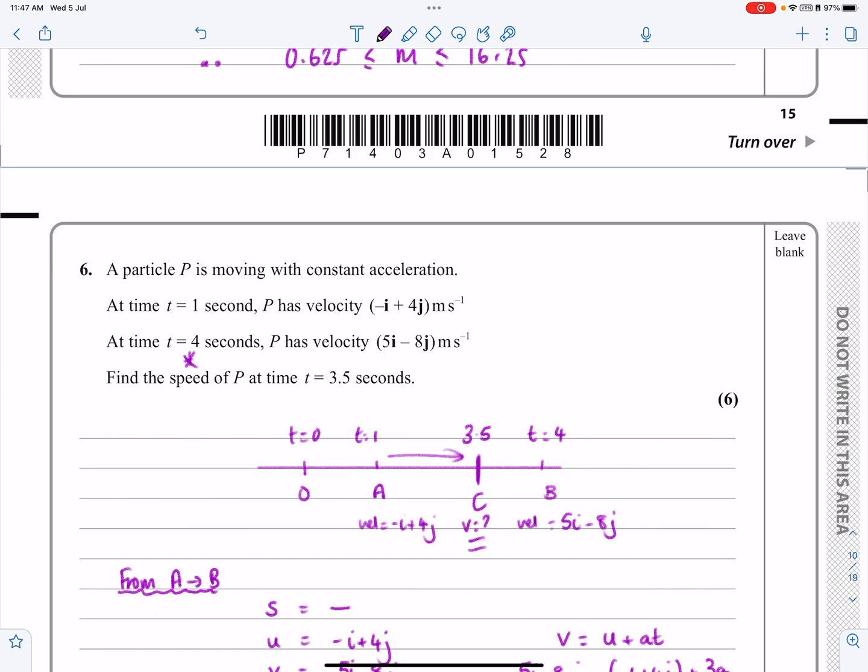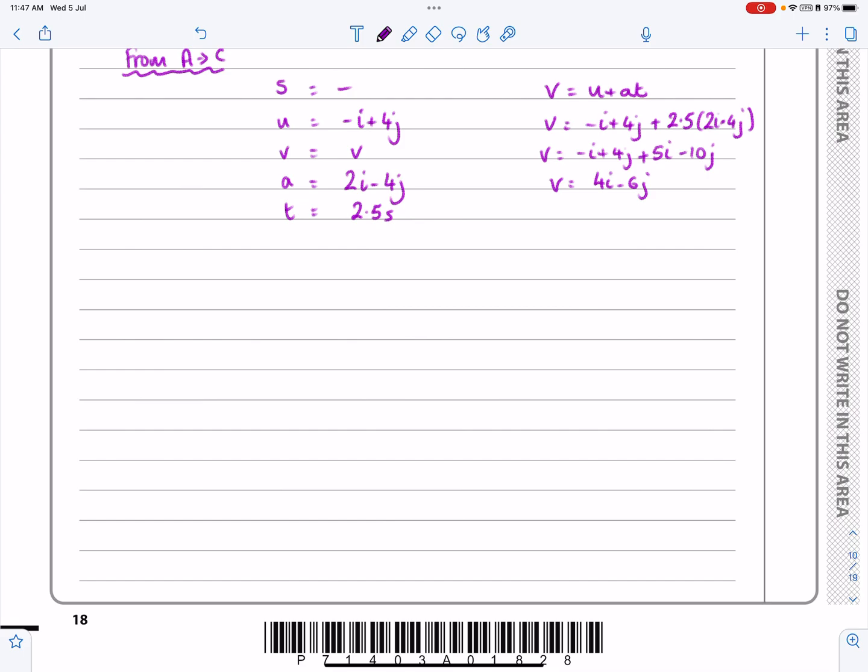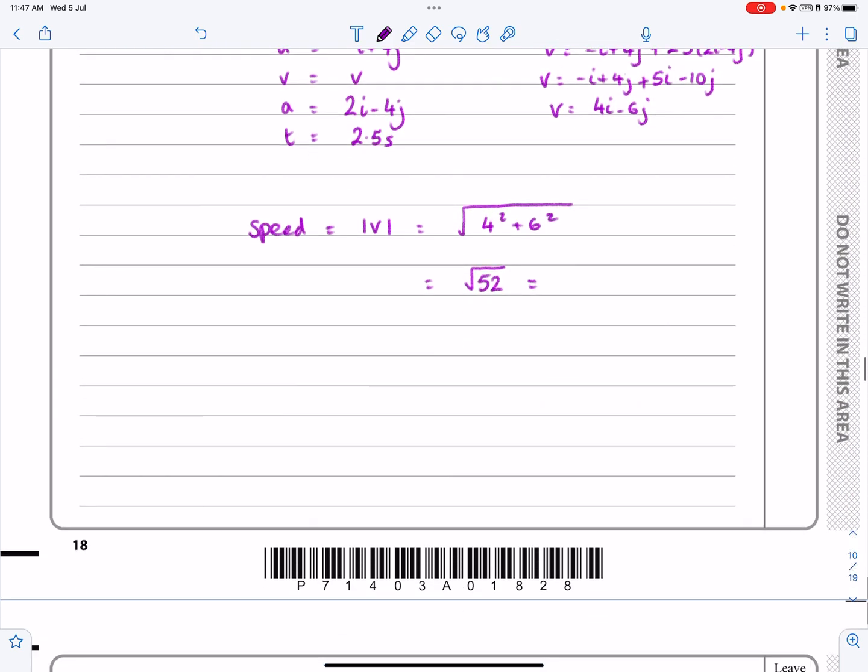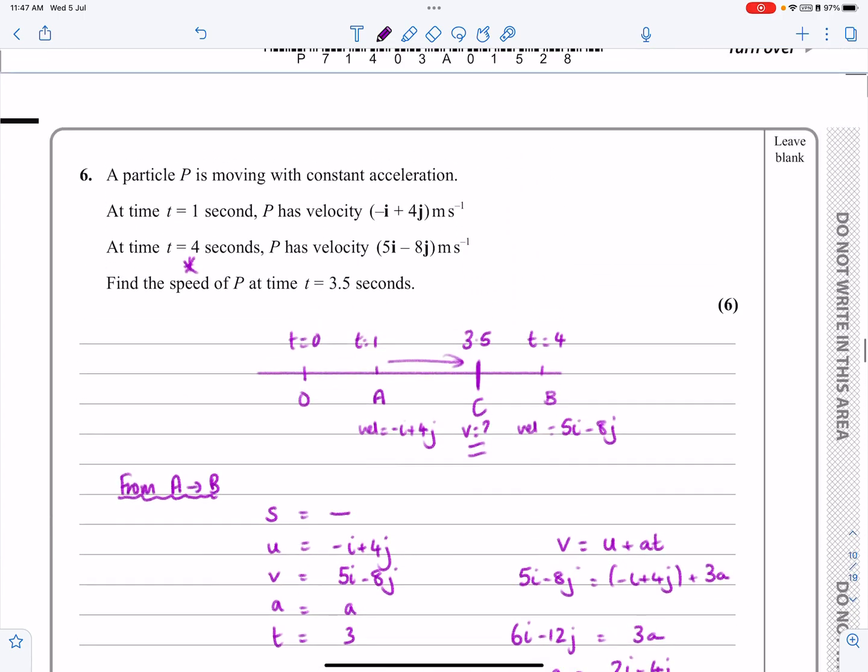The fact that I've highlighted this means I won't get caught out and lose the final mark or two marks. Speed is the magnitude of the velocity. That's the square root of 4 squared plus 6 squared. That works out to be root 52. Going back to check, it doesn't say anything about exact value or significant figures, so I'll leave it as 7.2 meters per second. Hopefully that makes sense.